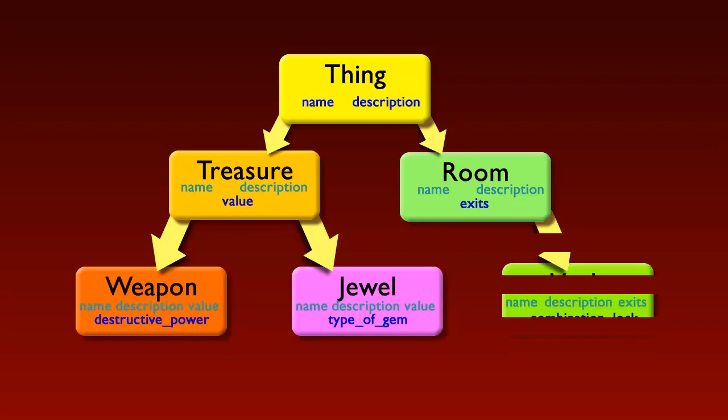And I can go on to define different lines of descent down other branches of the class family tree. Here Vault inherits from Room and it adds on one extra attribute, a combination lock.